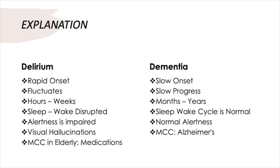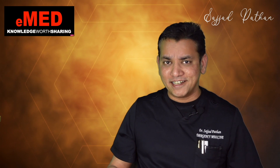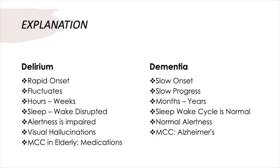In contrast, dementia has a slow, gradual onset lasting months to years. The sleep-wake cycle is often normal in dementia, and patients are usually alert. The most common cause of dementia is Alzheimer's. So the correct answer is: fluctuating confusion is seen in delirium.